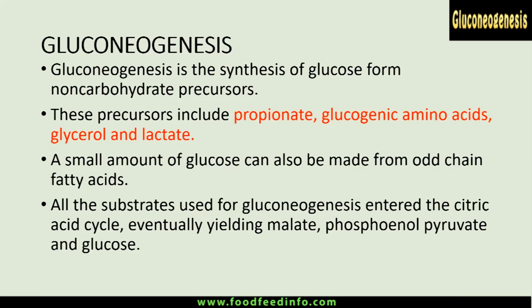Gluconeogenesis is defined as the synthesis of glucose from non-carbohydrate precursors. These precursors may be propionate, glucogenic amino acids, glycerol, and lactic acid or lactate. A small amount of glucose can also be made from odd-chain fatty acids produced by ruminal fermentation. The other substrates used for gluconeogenesis enter the citric acid cycle and yield malate, then phosphoenolpyruvate, pyruvate, and finally glucose.